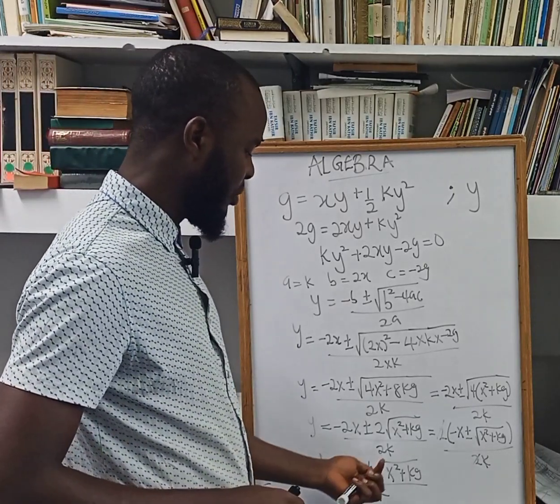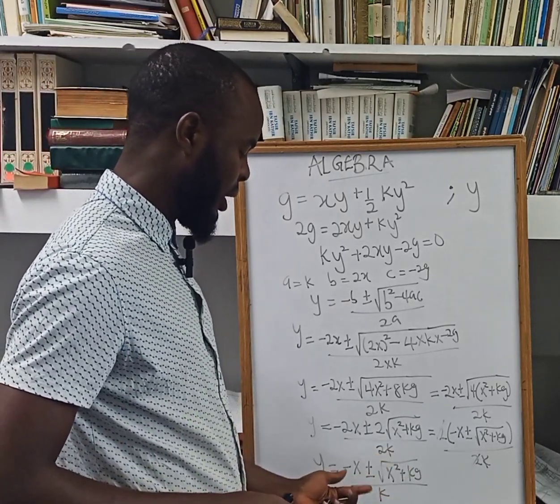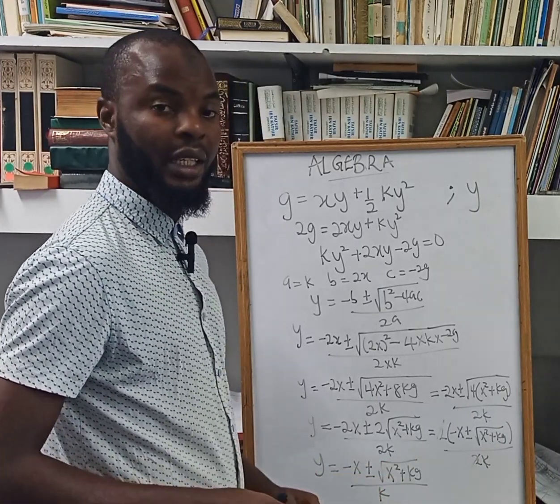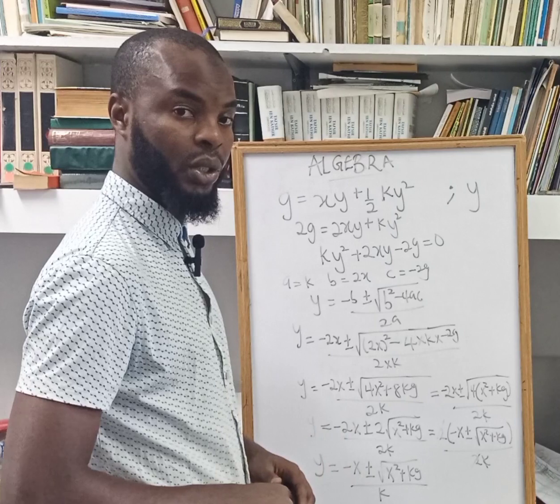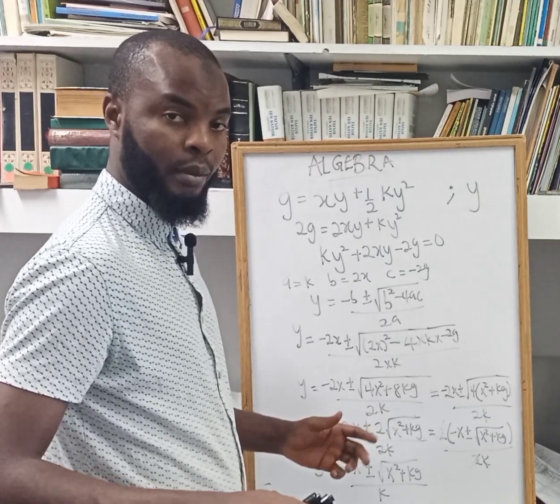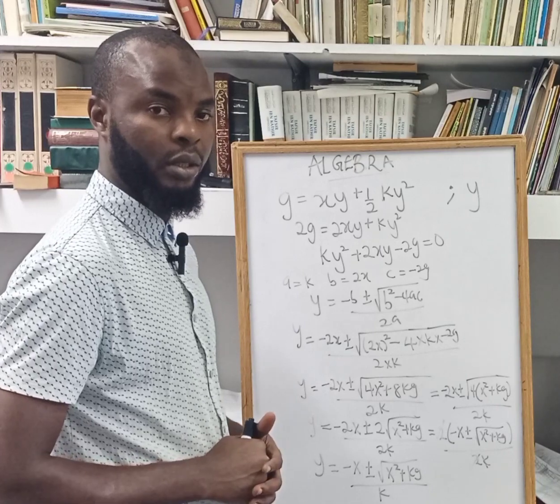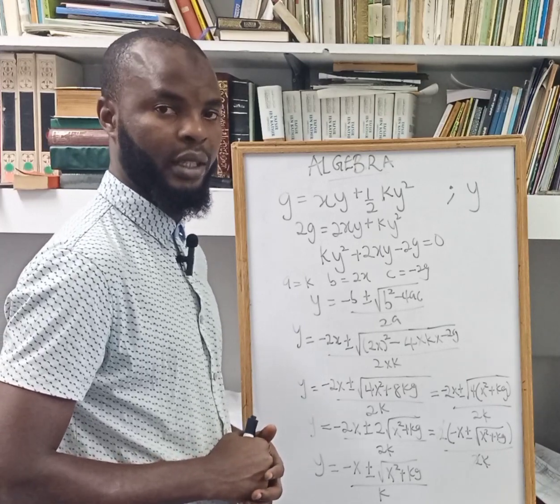So you can have negative x plus this root over k, or negative x minus this root over k. Thank you very much for watching my videos. If you have any suggestion or contribution, you can put it in the comment section. Don't forget to click on the subscribe button. Thank you, see you next time. Bye.